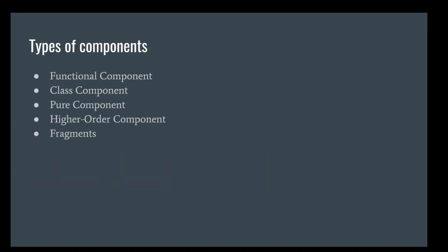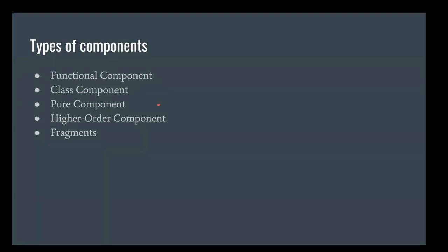There are plenty of components, but they are mainly classified into two types: functional components and class components. These are the two major ones most used by developers. There are also other types like pure components, higher-order components, and fragments. We will see them one by one and how these components help us build our own models.